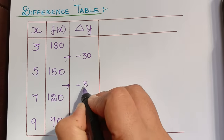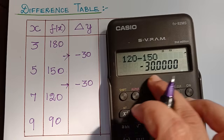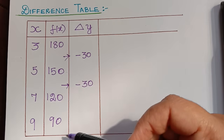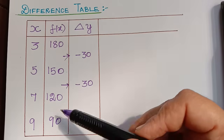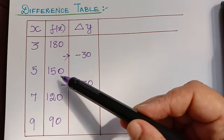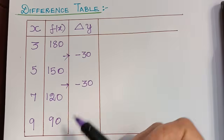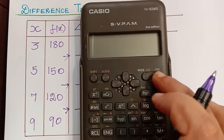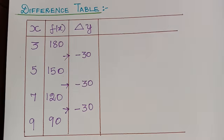For your understanding I will verify with a calculator. 120 minus 150 equals minus 30, and 90 minus 120 equals negative 30. The first difference column has all values of negative 30. Now we compute the next column, delta-squared y: negative 30 minus negative 30 equals minus 30 plus 30 equals 0. Similarly the second entry: minus 30 minus negative 30 equals 0.